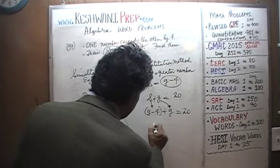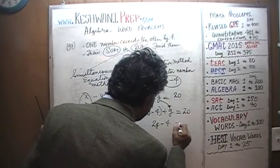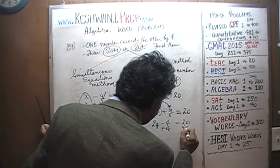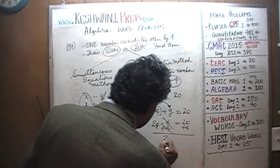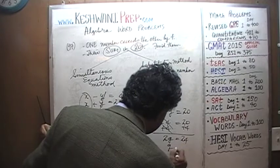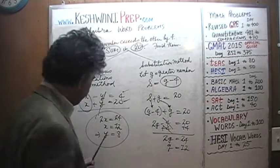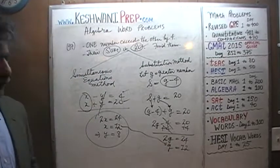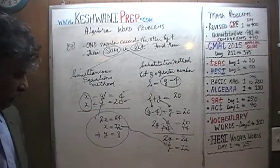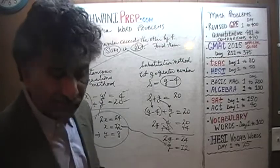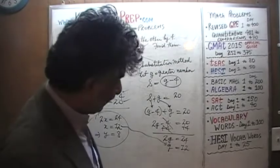G plus G is 2G, so 2G minus 4 equals 20. Bring the 4 to the other side: 2G equals 24, and G equals 12. So the greater number is 12, just like before. One method is called the simultaneous equations method and the other is called the substitution method.